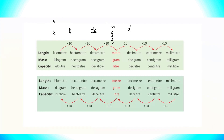Then centi represented by C, and milli represented by M. Generally we write M for milli, but to avoid confusion with meter, you can write it as MI for your understanding.